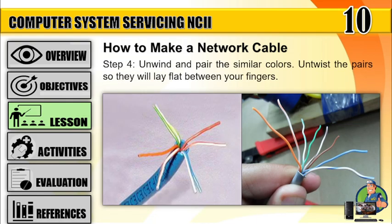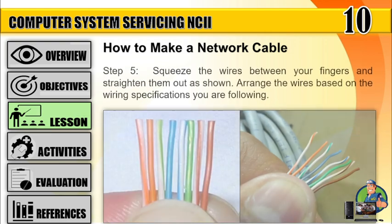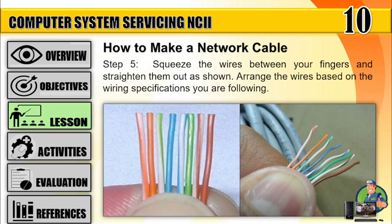Step 4: Unwind and pair the similar colors. Untwist the pairs so they will lay flat between your fingers. Step 5: Squeeze the wires between your fingers and straighten them out as shown. Arrange the wires based on the wiring specifications you are following.